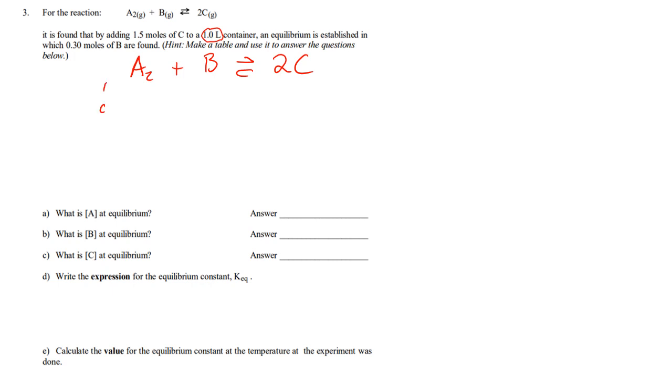I'm going to write my ice table. And it's found that adding 1.5 moles of C. Now, here's the interesting thing, is that you don't have to start with reactants. You can start with products. Since it's 1.5 moles in a 1.0 liter container, the molarity is 1.5 molarity. And it is implied that we start with 0B and 0A.